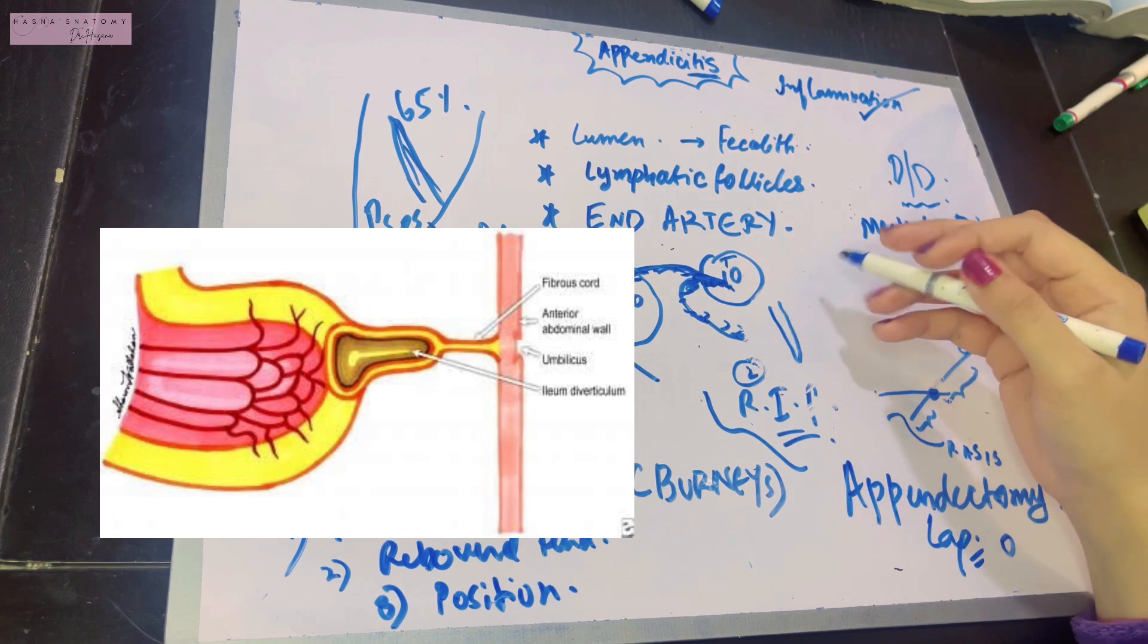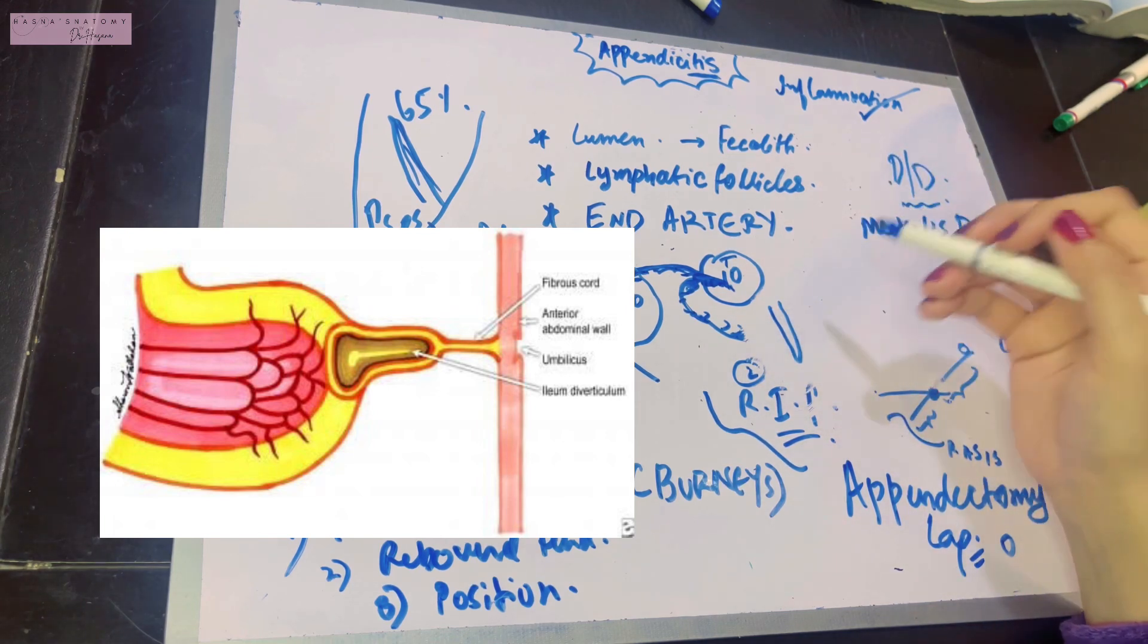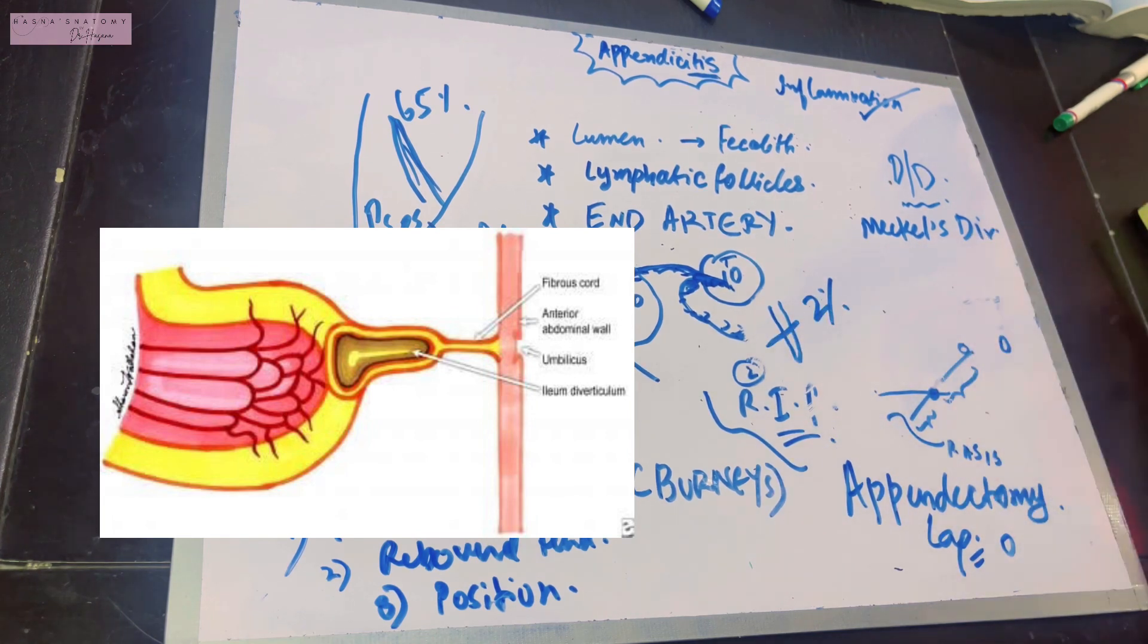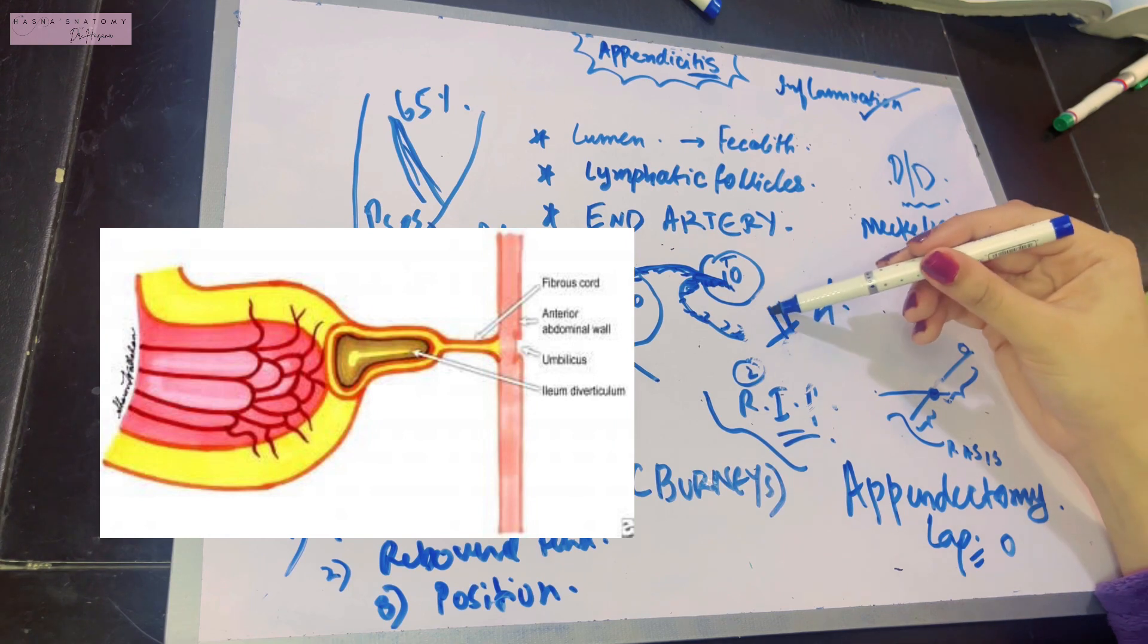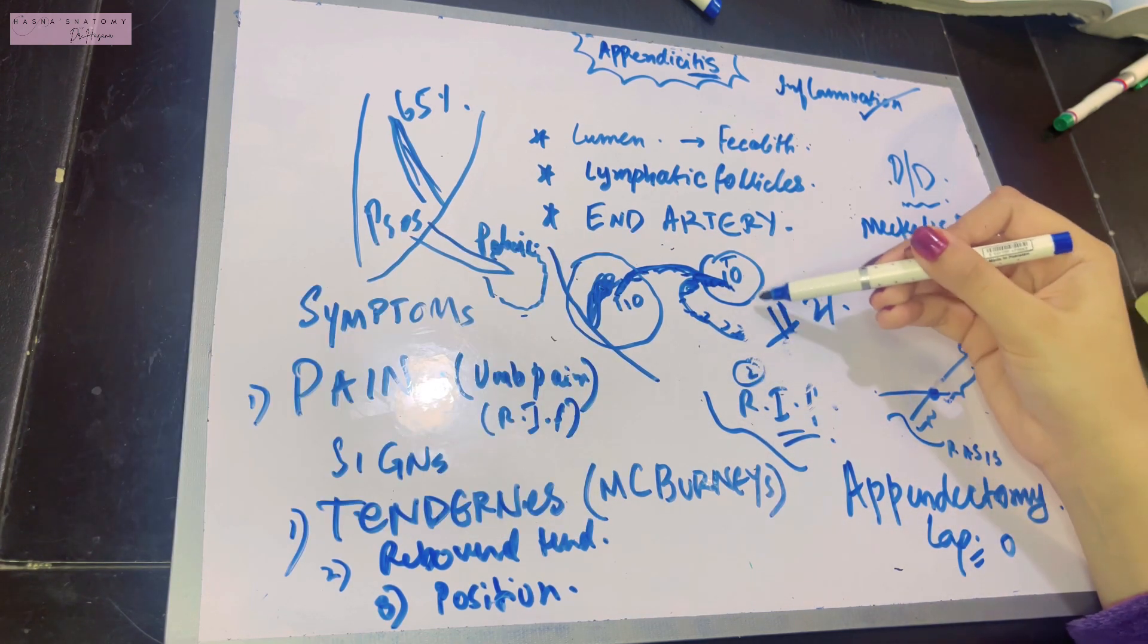There was this vitelline intestinal duct in the embryo. In two percent of people, the proximal part persists. This basically lies about 30 to 60 centimeters proximal to the ileocecal junction on the ileum.